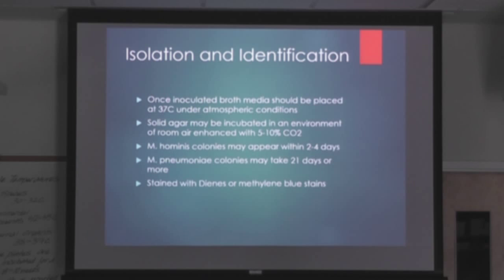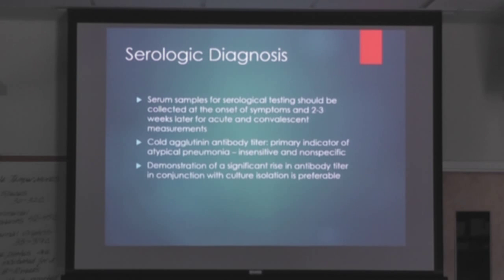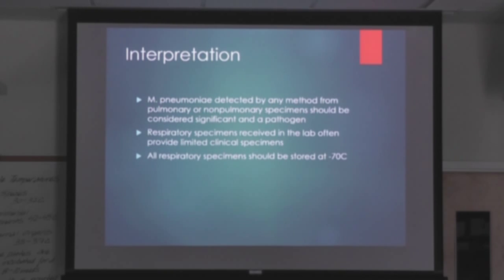Know what stains can be used — there are two options on the slide for staining purposes. For serological diagnosis, serum samples can be submitted. Cold agglutination antibody titer is the go-to for atypical pneumonia; however, it's been found to be non-specific, so it's not giving great results anymore. All respiratory specimens should be stored at minus 70°C — that comes up again, so it's very important.